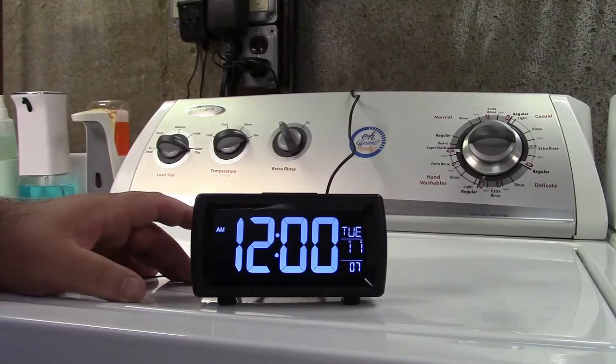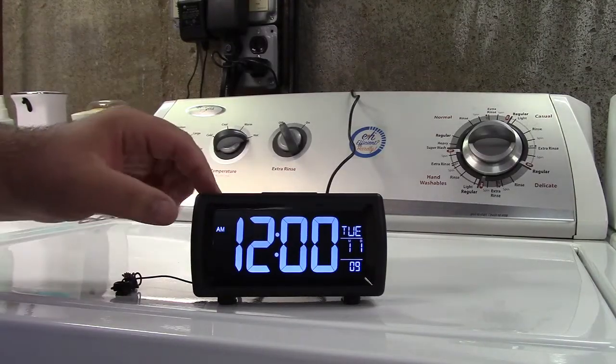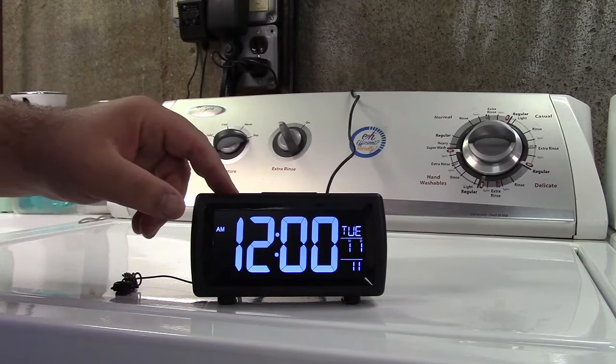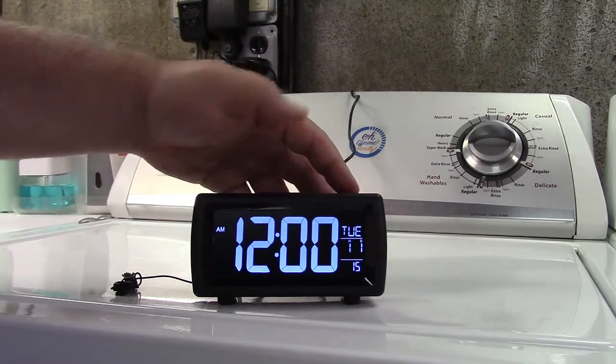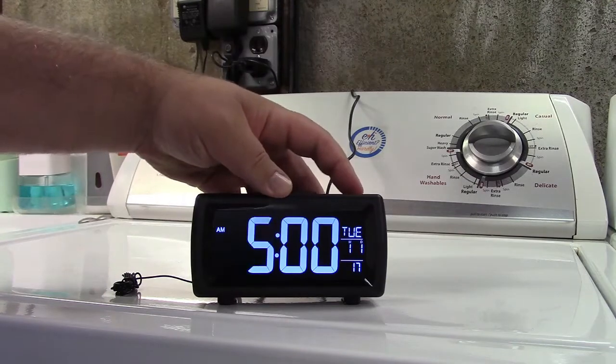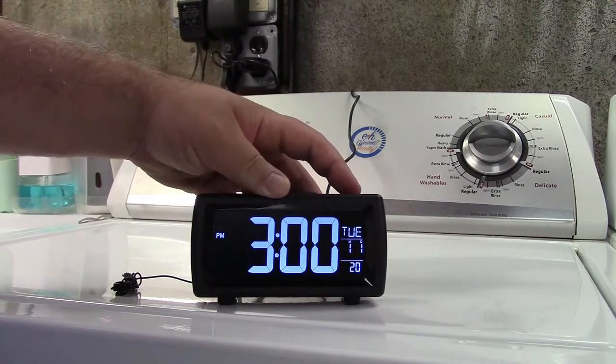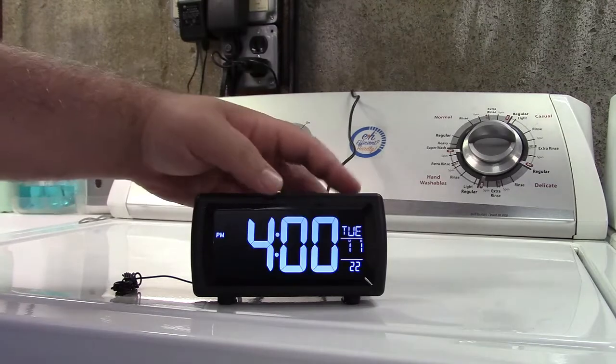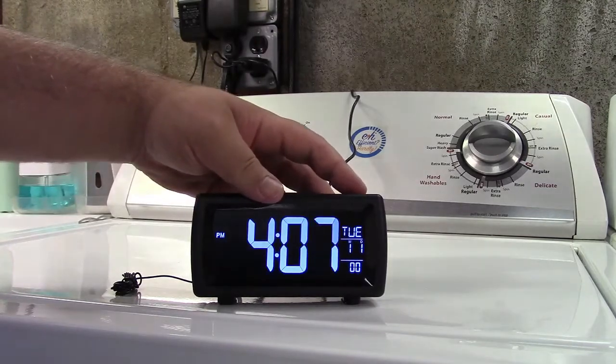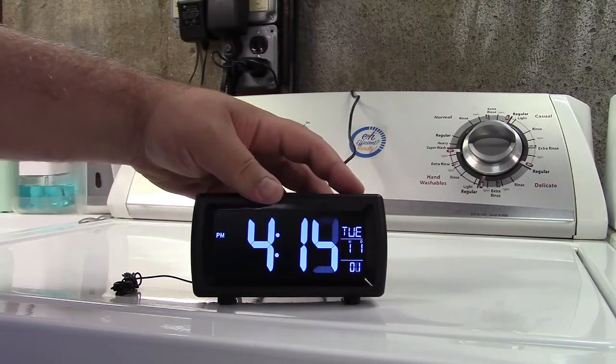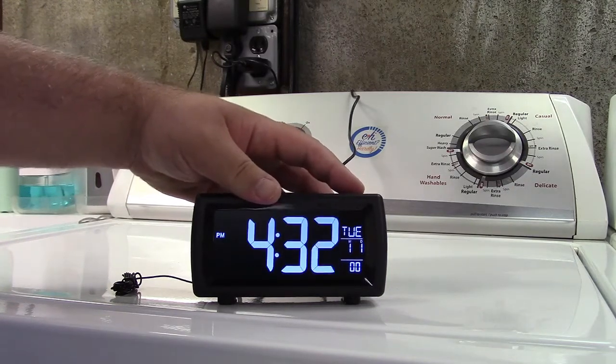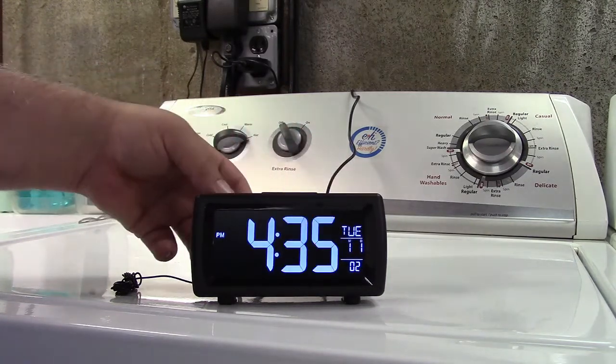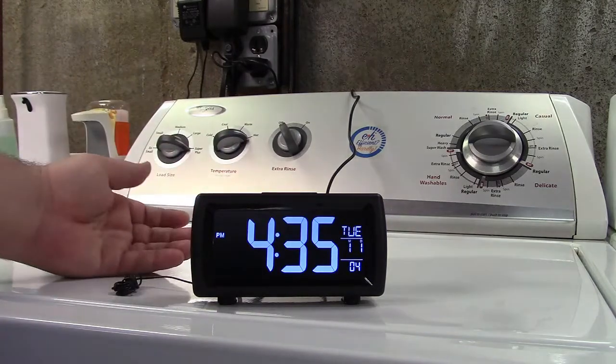The clock is very easy to set. There's a 12/24 button right in the upper left corner, which will hold down. And then there's up and down arrows. So we're going to set the hour. It's currently 4:35 p.m. We'll go to 35. Press the button again. And we're all set.